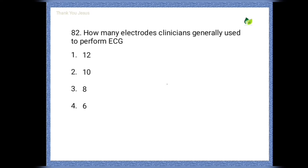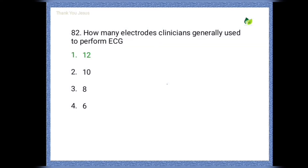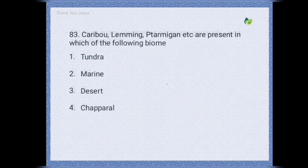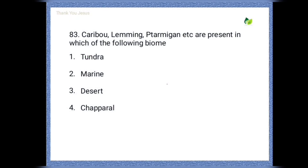Next question: how many electrodes do clinicians generally use to perform ECG? Options are: 12, 10, 8, 6. The correct option is 12.